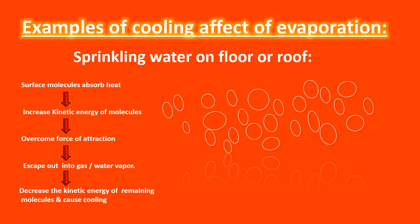Sprinkling water on the floor or on the roof during the summer causes a cooling effect. This is because the surface water molecules absorb heat from the surroundings and escape to the atmosphere. As a result, the average kinetic energy of the remaining molecules falls. The remaining molecules draw the necessary heat from their surroundings to increase their kinetic energy and evaporate, so the surroundings — the floor, ground, or roof — get cooled.